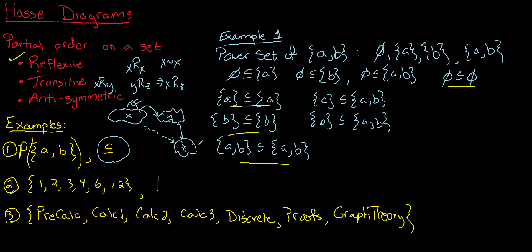Let's check that subset containment is transitive. For example, the empty set is a subset of {A}, and {A} is a subset of {A,B} — is the empty set a subset of {A,B}? Yes. There's not much else to check in this small set, so we're all set with transitivity.